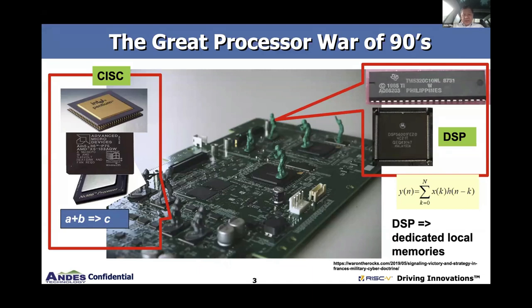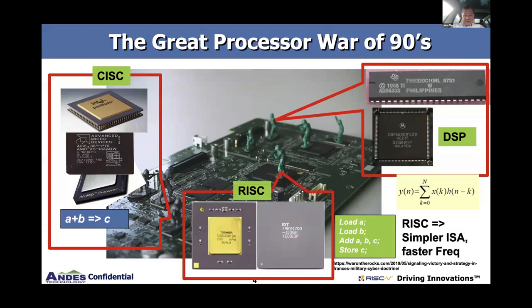RISC processors came along about this time, MIPS being very popular, where I spent about 15 years of my life in MIPS architecture. Basically, the RISC processor took the CISC processor and decided to make hardware simpler because software could be compiled and optimized to get a higher frequency. So in the 90s, we lived with three major architectures: CISC, RISC, and DSP.